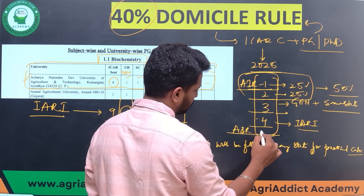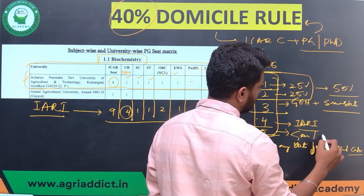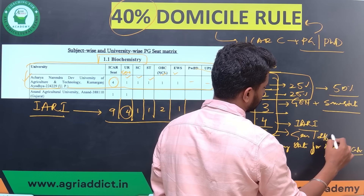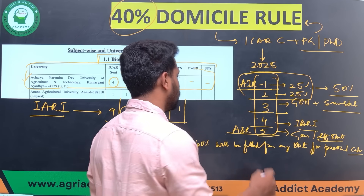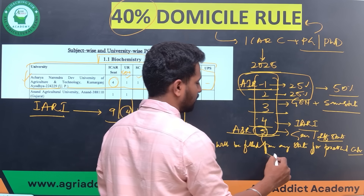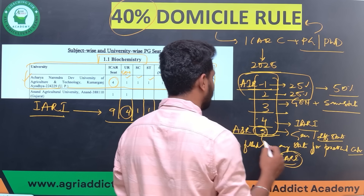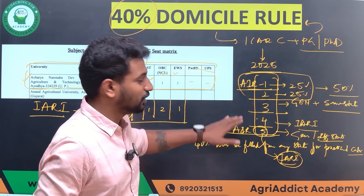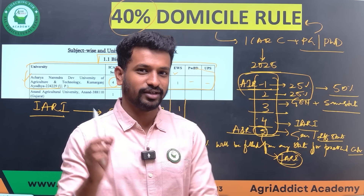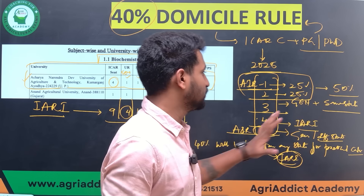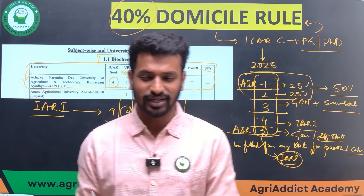If the fifth ranker is from a different state — even from the same general category — and keeps IARI as his top priority, he will definitely get IARI. But ranks two, three, and four will miss IARI because the all-India first ranker was from the same state and same category, consuming the 40 percent domicile quota.